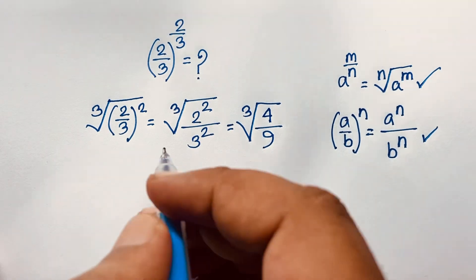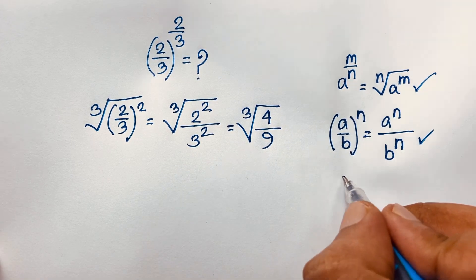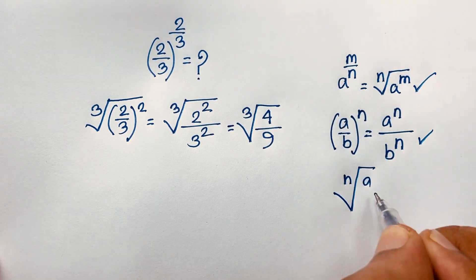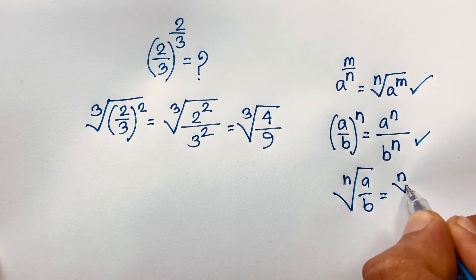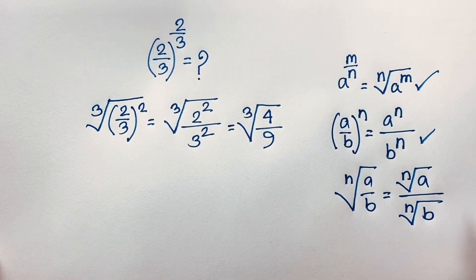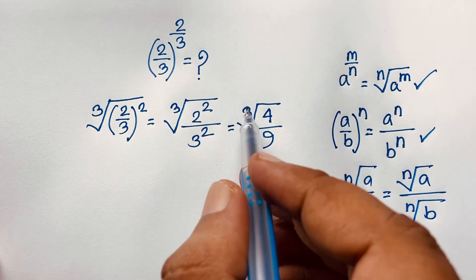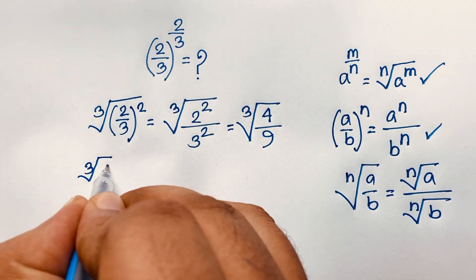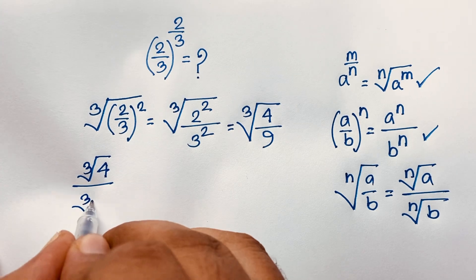Now, we know that the n-th root of a over b equals the n-th root of a over the n-th root of b. According to this formula, this expression will be cube root of 4 over cube root of 9.